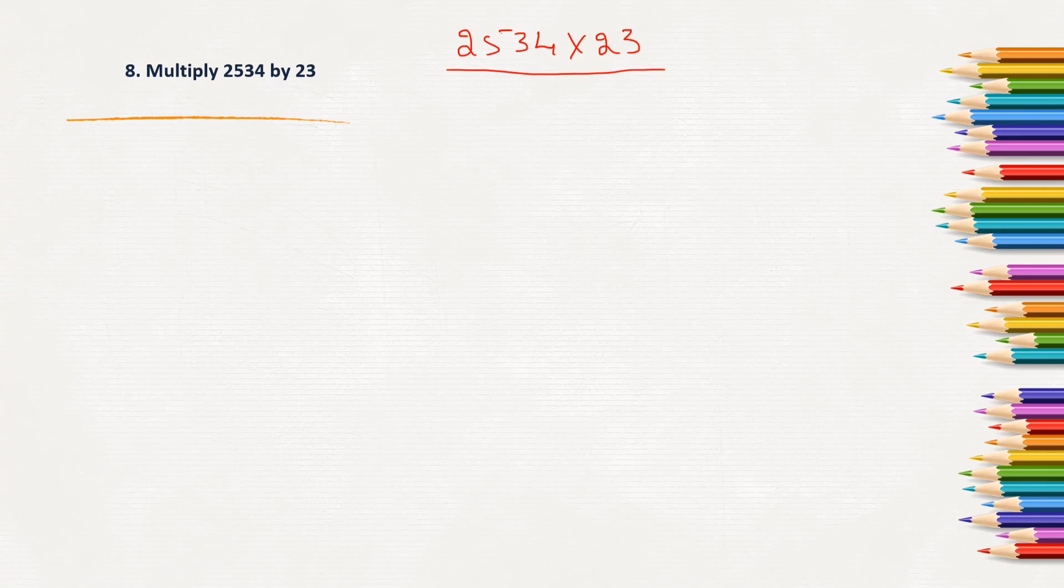So, here 3 ones, we will start multiplying from ones, 4 ones. Next, we will move to 3 tens, then 5 ones, or 5 hundreds, and then 2 thousands. So, 3 times 4 will be 12, 1 carry.